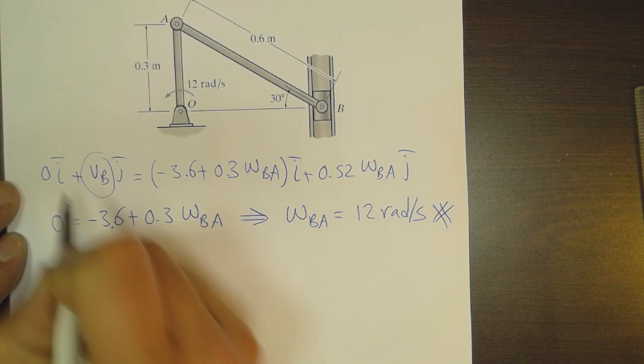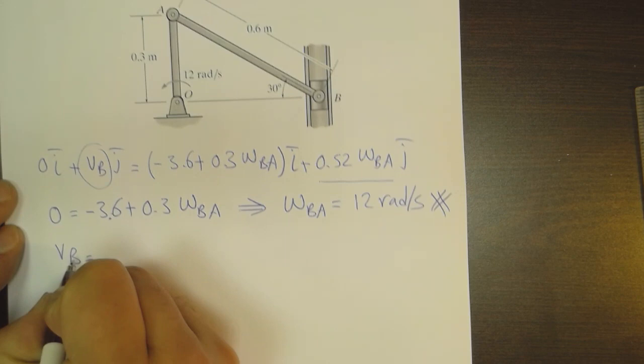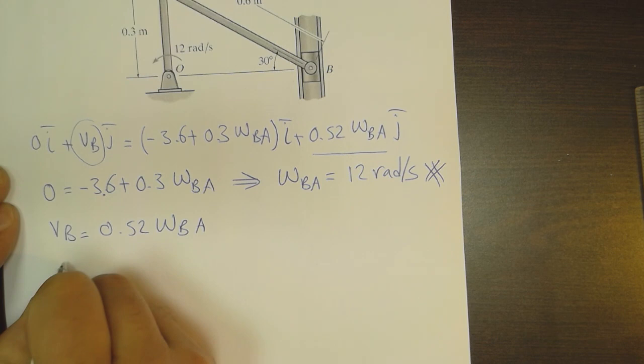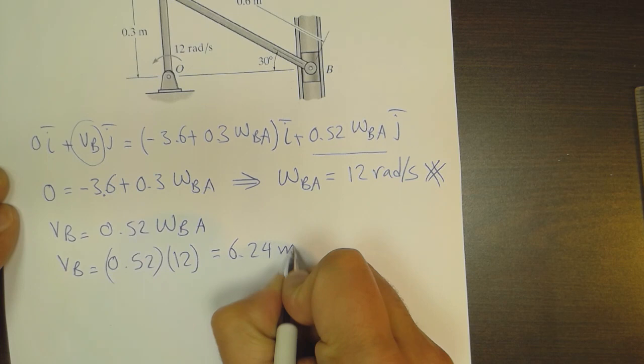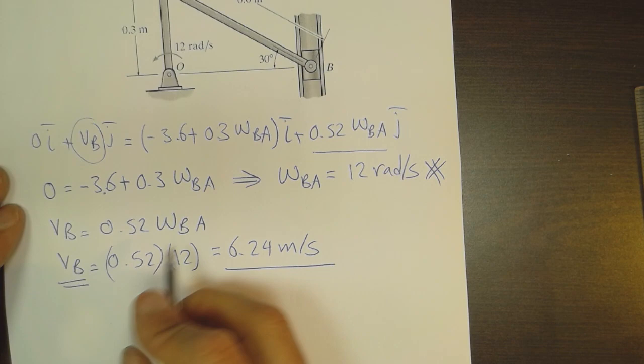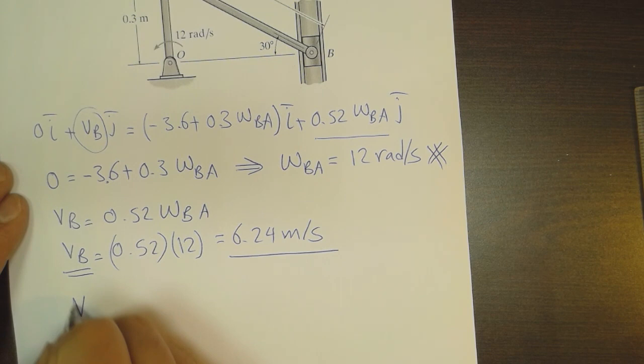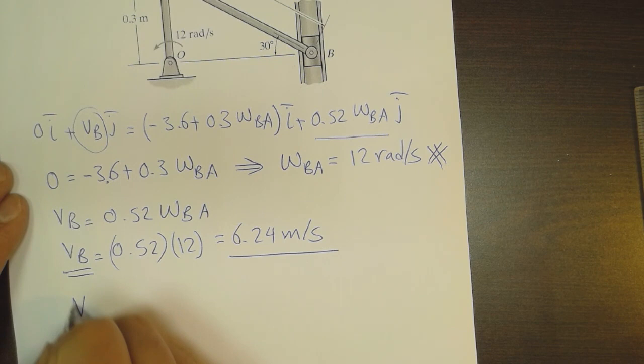Now solving for V_B from the j component: V_B equals 0.52 times omega_BA equals 0.52 times 12, which gives V_B equals 6.24 meters per second. In vector form, V_B equals 6.24j, which is the velocity of the piston going upward.